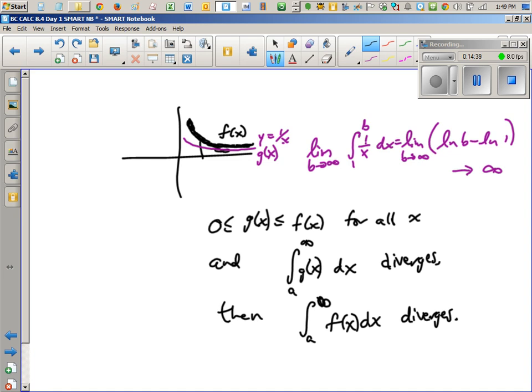You also can't use it to say, oh, I've got a convergent graph and there's a curve above it, well then that doesn't mean the one above it's convergent.